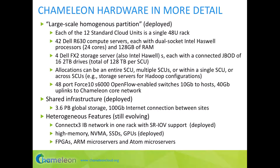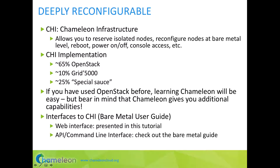In addition, later this year we are hoping to release Atom microservers and Arm microservers. How is all of this hardware configured, and how can you access it? We developed infrastructure called CHI, or Chameleon Infrastructure, which allows you to reserve isolated nodes, reconfigure nodes at bare metal level, reboot, power on or off, and have console access. There are two ways to use Chameleon: via the web interface, which we will mostly present in this tutorial, and via the command interface for advanced users or scripting.